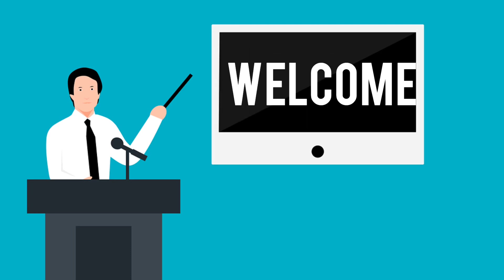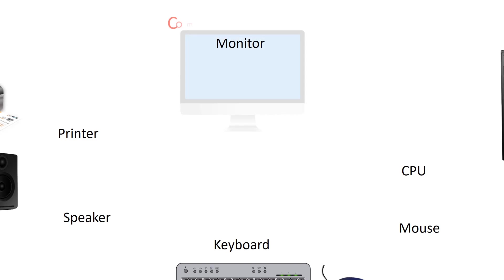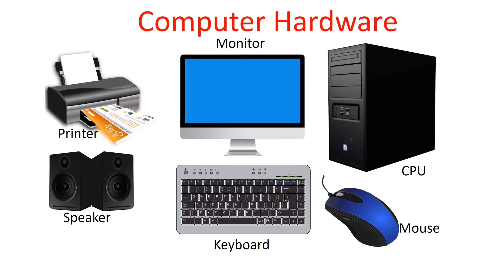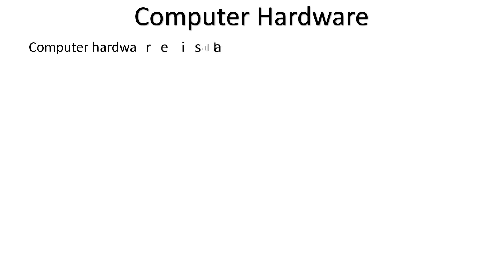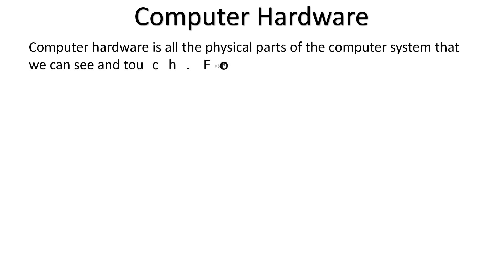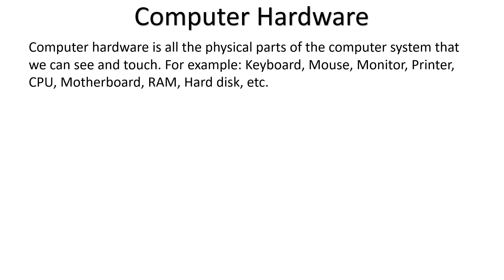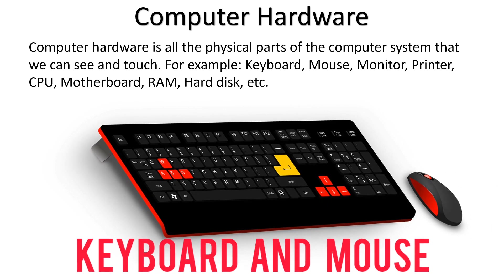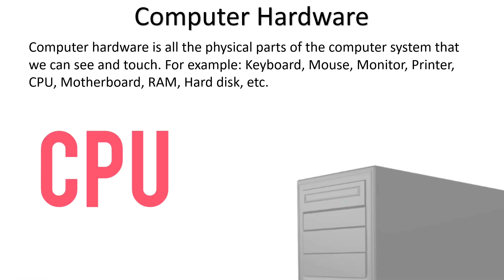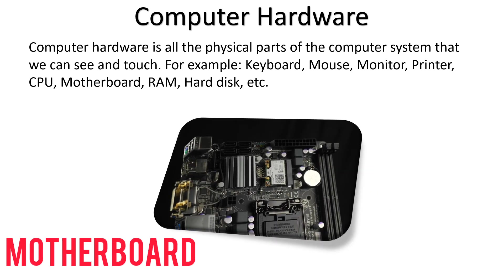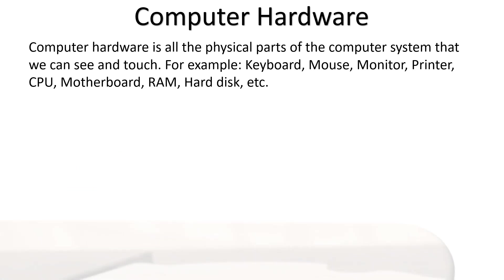Hello everyone, and welcome. In this video I will explain about computer hardware. After watching the complete video, you will know the different hardware parts of the computer system and their functions. Computer hardware is all the physical parts of the computer system that we can see, touch, and feel. It is the physical component that makes the complete computer system — for example, the keyboard, mouse, monitor, printer, CPU, motherboard, RAM, hard disk, and so on.